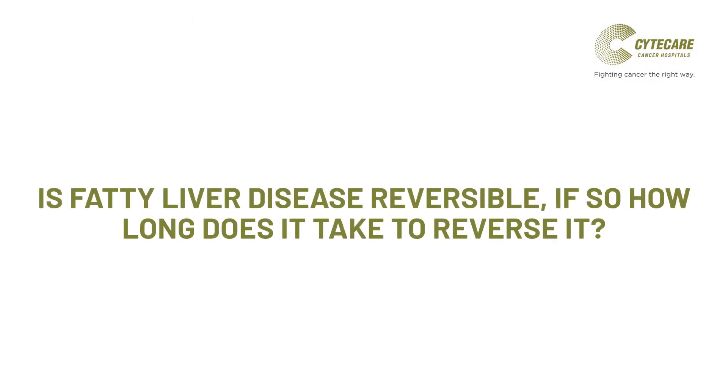If you reduce weight by 10%, in about three months the fatty liver grade can come down from grade 3 to grade 2 to grade 1. Three to six months is the routine time required for reversal. If it has progressed to the NASH-hepatitis phase, it may take three to six months of medication to reduce fibrosis. Fibrosis stages F1 and F2 can come back to below F2 in about three months; F4 is almost cirrhosis.